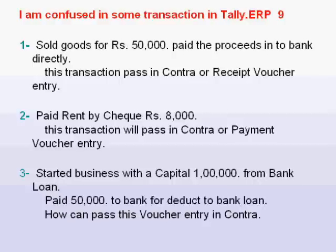First of all, we started the business with $100,000 — it is not our own capital, it is a bank loan. So we will pass this voucher entry in a receipt voucher, not in a contra voucher. Just debit the cash account and credit the bank loan account. Bank is a personal account, but the bank gives us money in the form of a loan, so the loan is our liability. By passing this voucher entry, we are showing bank loan as a liability in our balance sheet.